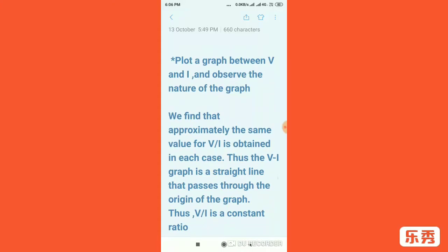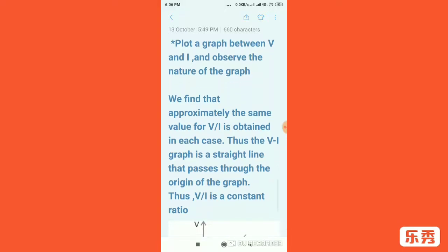You will find that approximately the same value for V by I is obtained in each case. Now it may differ in a point difference but we notice that approximately same value. If it is 7, it stays as 7, 7.1, 6.9, something like that.